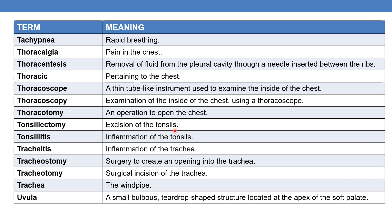Tonsillectomy is excision of the tonsils. Tonsillitis is inflammation of the tonsils. Tracheitis is inflammation of the trachea. Tracheostomy is surgery to create an artificial opening into the trachea, where -ostomy indicates artificial opening. Tracheotomy is a surgical incision of the trachea, where -otomy indicates incision. Trachea is commonly known as the windpipe.